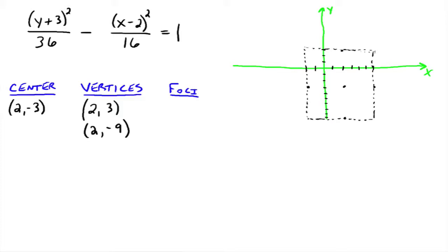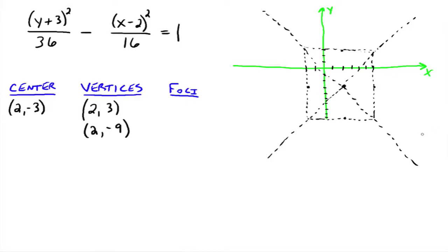Then do your asymptotes. The asymptotes always go from corner to corner and they go through the center. If we needed to find the equations for the asymptotes, we could by taking the two corner points and finding the equation of the line. Since this is a vertical transverse axis, the hyperbola opens up or down — those spots are your vertices. There's your graph of the hyperbola.